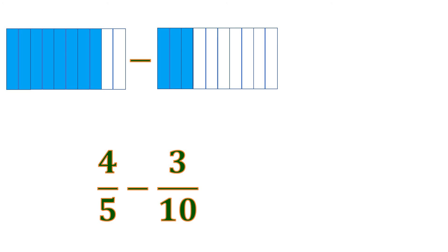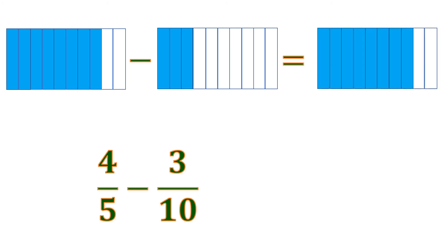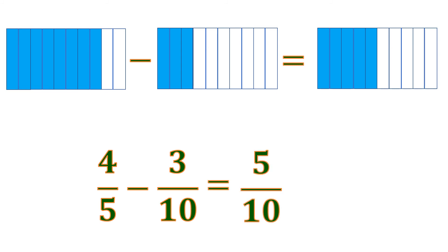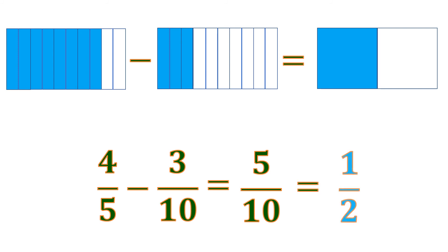Now let us subtract. Starting from 4 fifths, which becomes 8 tenths, we remove 3 out of 10, and what's left is 5 tenths. That means the difference between 4 fifths and 3 tenths is 5 tenths. But if we remove some slices, it becomes 1 half — so 5 tenths can be reduced into 1 half.